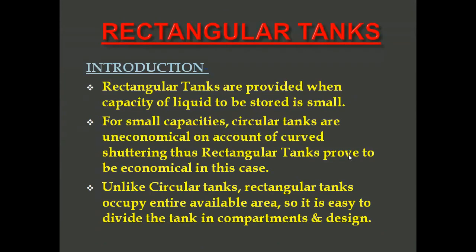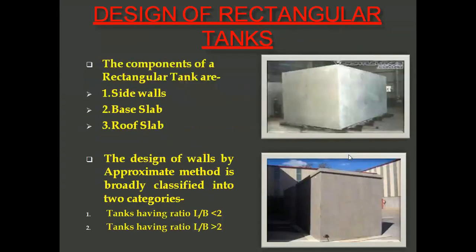Rectangular tanks are provided when the required capacity is small, since for small capacities circular tanks are uneconomical on account of curved shuttering. Rectangular tanks prove to be more economical in such cases. Unlike circular tanks, rectangular tanks occupy the entire available area, making it easy to divide the tank into compartments and design. This is especially important as far as cracking control is concerned.